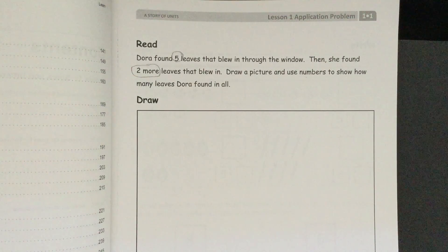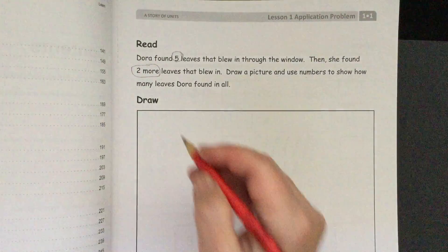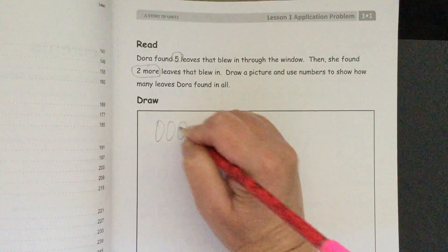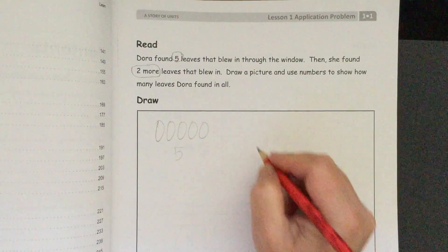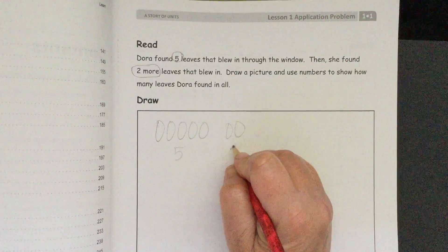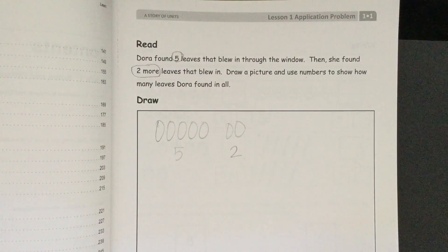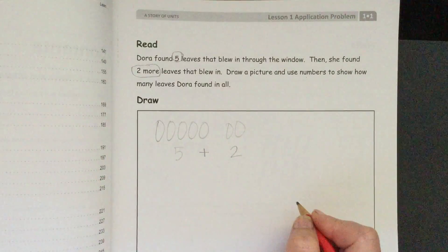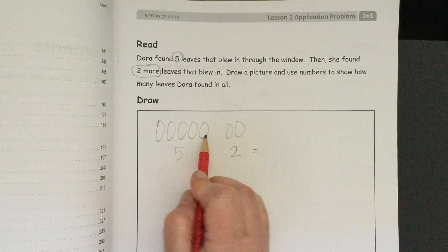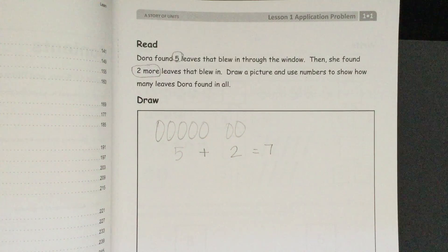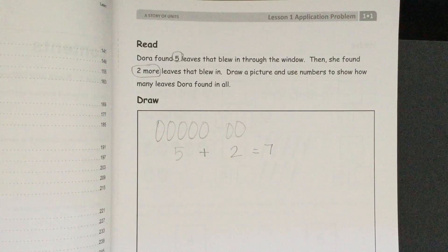We can do that by drawing the picture and using our numbers to show how many leaves she found. We'll need a math picture. We don't want to get too fancy because that will just take up way too much time. But we could draw 1, 2, 3, 4, 5. Those are the first 5 leaves. And then 2 more blew in. We could make that into an equation, our math number sentence, by just adding a plus sign there. And then we have 1, 2, 3, 4, 5, 6, 7.